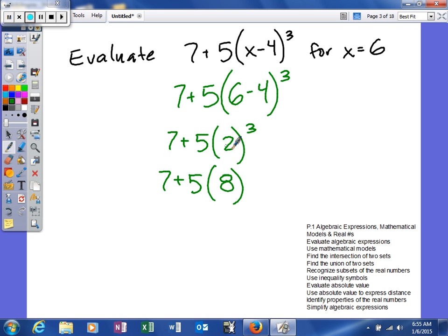Make sure that you don't multiply these two things first, because that's not following order of operations. And then we multiply 5 times 8 next, to give us 40.